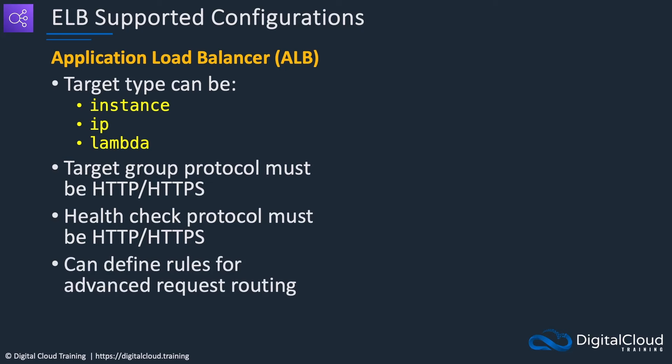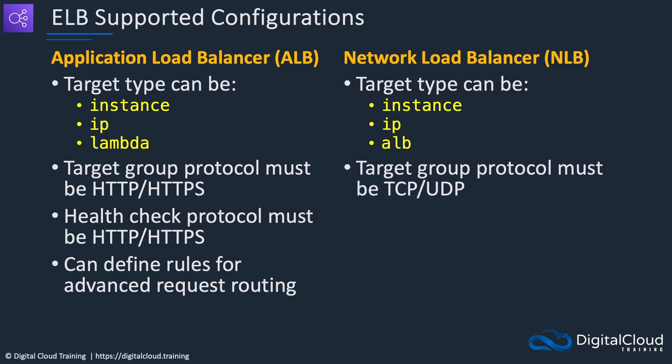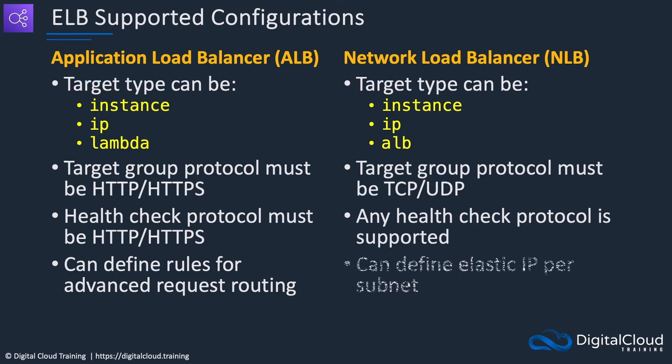You can also define rules for advanced request routing with the ALB, but not with the NLB. The NLB has targets which can be instances, IP addresses, or application load balancers. You can put a network load balancer in front of an ALB — the NLB provides very low latency, making it great for large numbers of connections with minimal latency, and then you can have your ALBs behind the NLB. The target group protocol for an NLB must be TCP or UDP, and any health check protocol is supported. You can also define elastic IPs per subnet — specific to the NLB — giving you a static public IP address assigned to nodes in each availability zone.